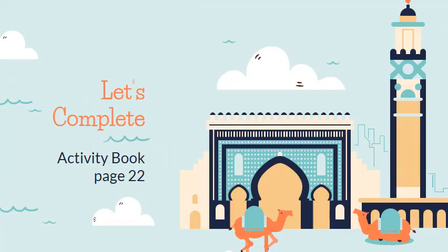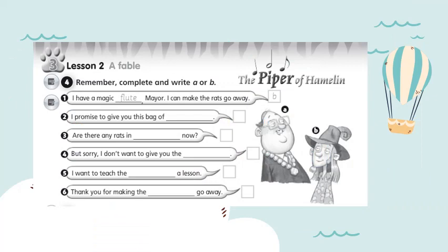Now I want you to open your activity book to page 22. For this exercise, you're going to complete the sentences with the missing words. And after that, you're going to write A or B depending on who said what. The sentences said by the mayor — write letter A. The sentences said by the piper — write letter B. If necessary, you can listen to the story again or read it in your student's book.